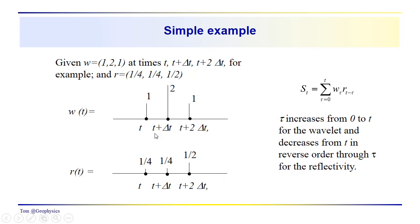I have two simple series here. The wavelet has three samples with values one, two, and one. The reflectivity sequence has three samples with values one-fourth, one-fourth, and one-half. These could be at arbitrary times, or times zero, one, and two, for example.